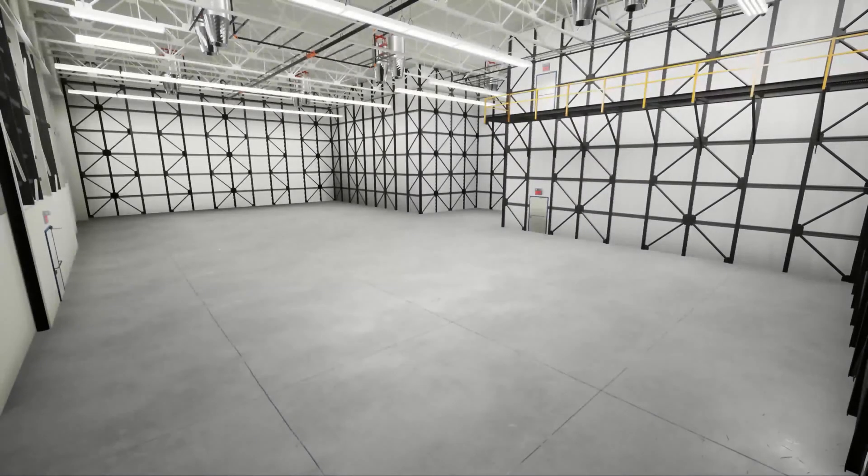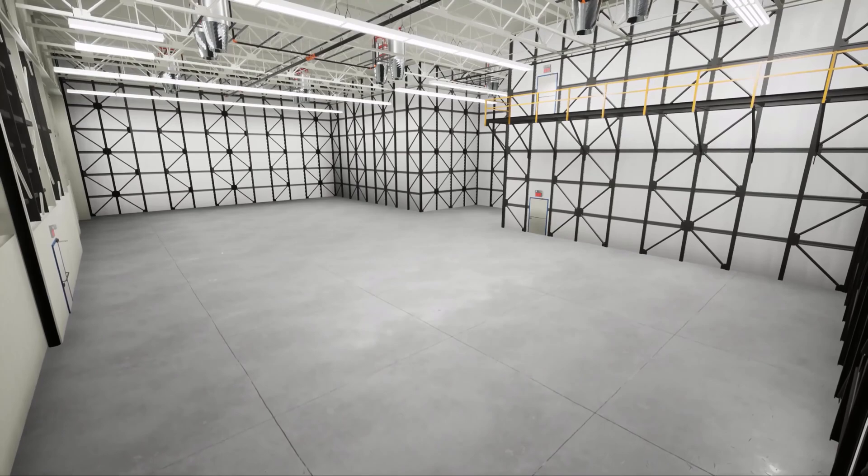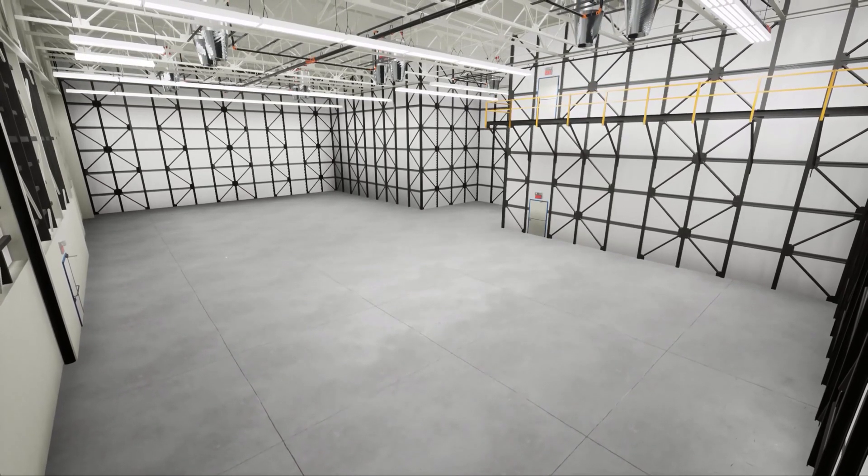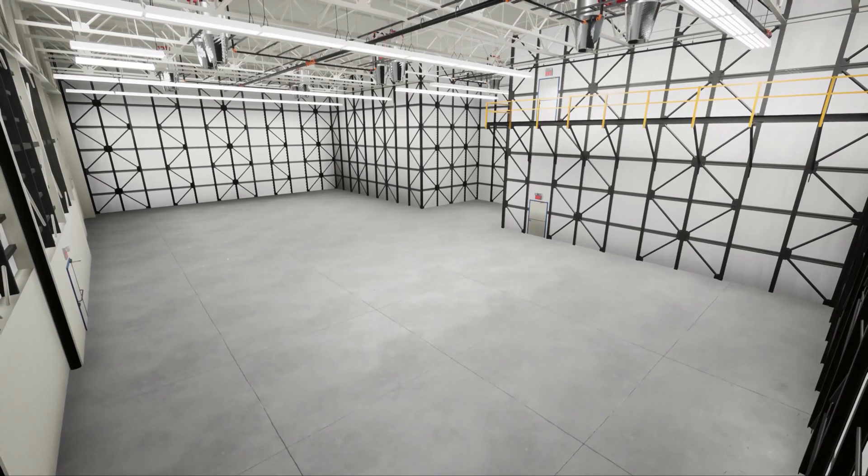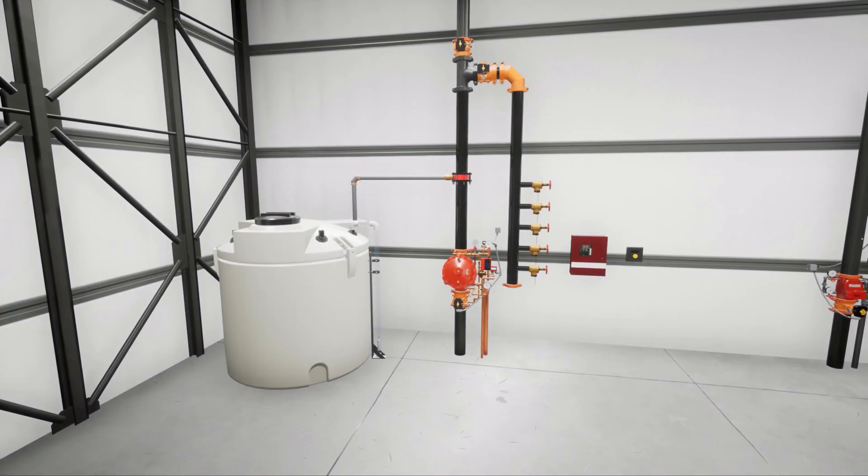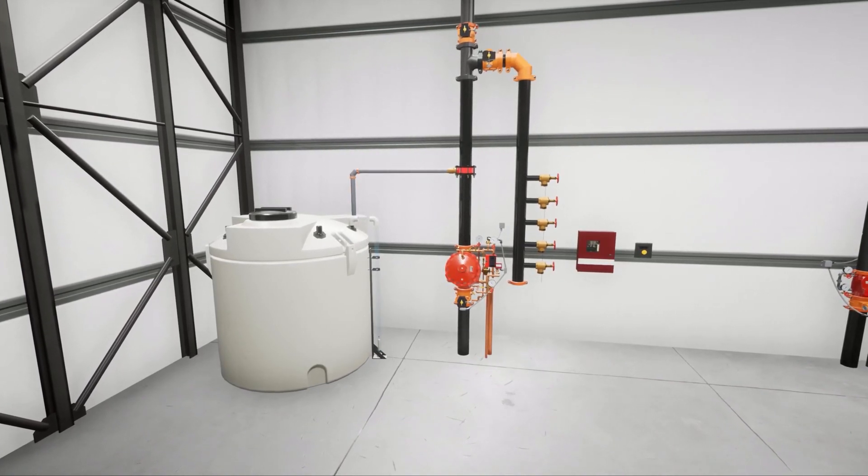In this scenario, we are looking at an aircraft hangar protected per the Unified Facilities Code. The Unified Facilities Code is a directive put out by the U.S. Department of Defense on the methods used to build their facilities. The hangar is protected with an electric release pilot pressure regulating flow control system.